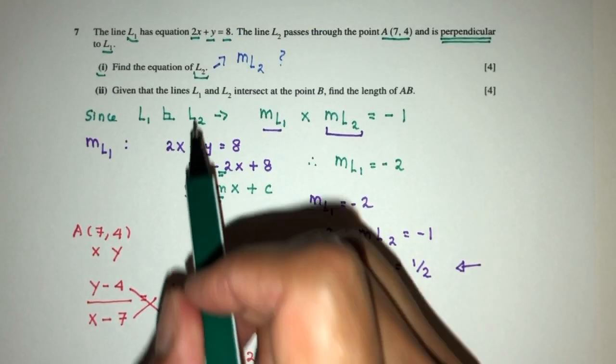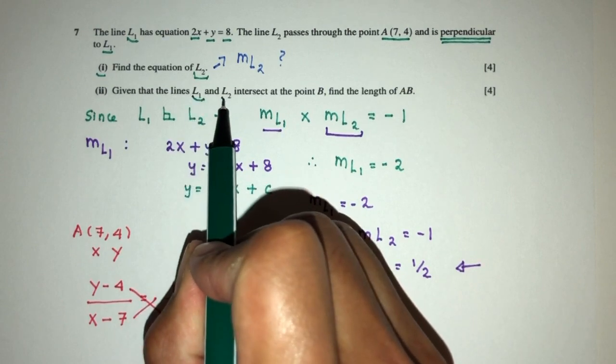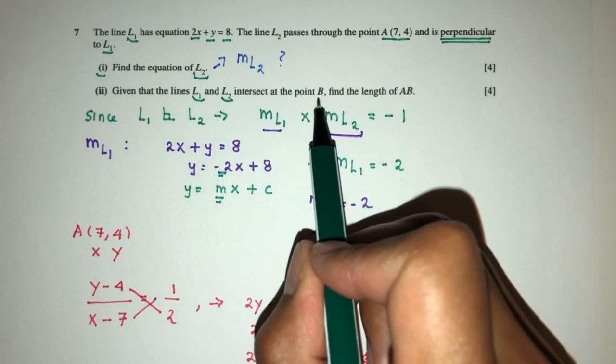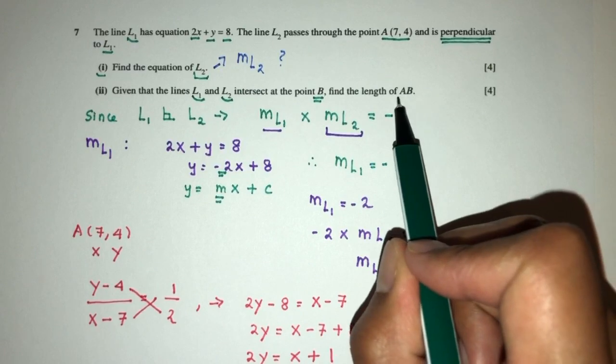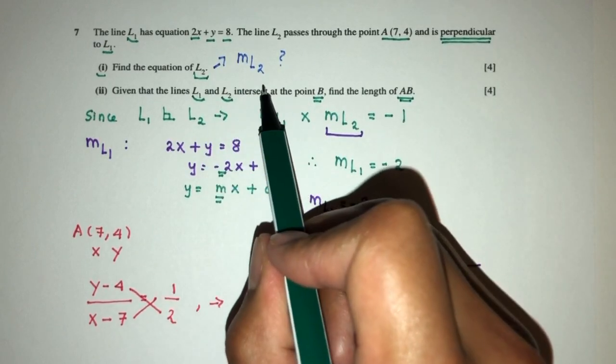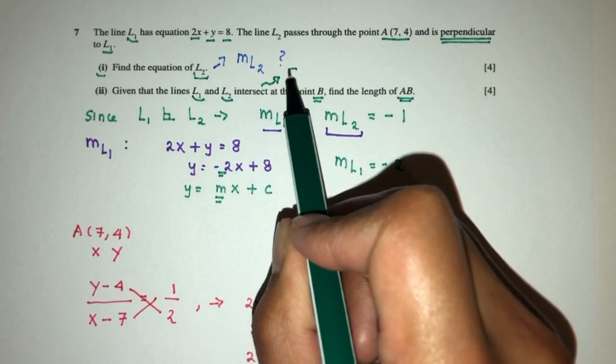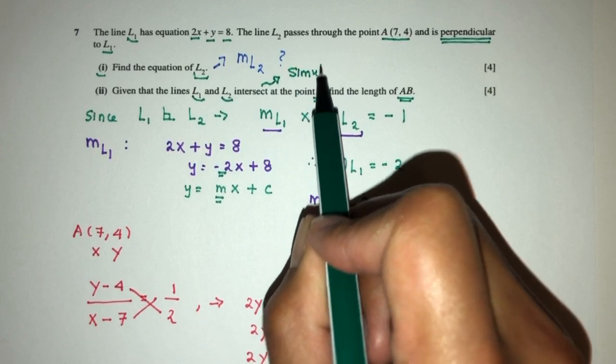Now, given that the lines L1 and L2 intersect at the point B, find the length of AB. So pretty easy. Now, as you can see here, we have intersect that will lead to a simultaneous equation, right?